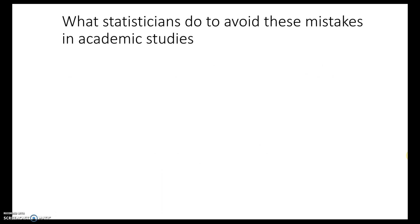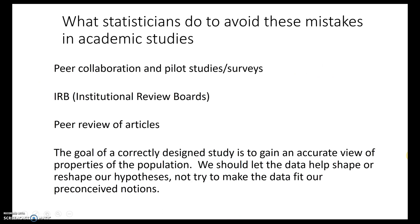So what do statisticians do to avoid these mistakes in academic studies? We generally look for peer collaboration and pilot studies. We use what's known as an IRB, which is an institutional review board. We peer review articles. The goal of correctly designing studies is to gain an accurate view of properties of the population — in other words, to avoid all these different types of bias and give the clearest picture of what's going on.